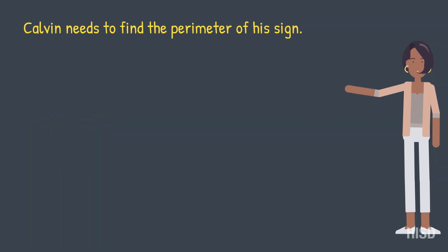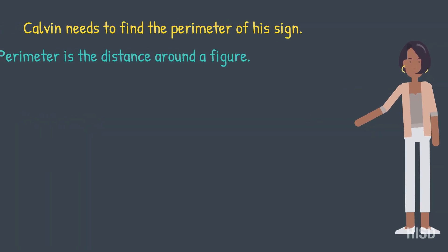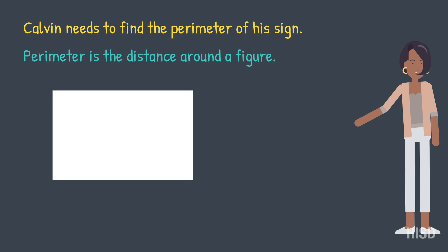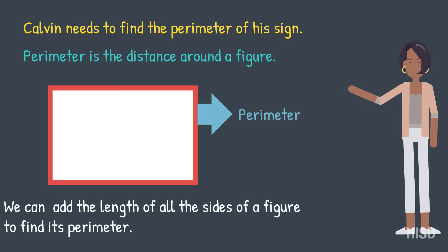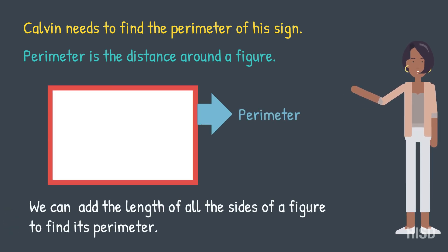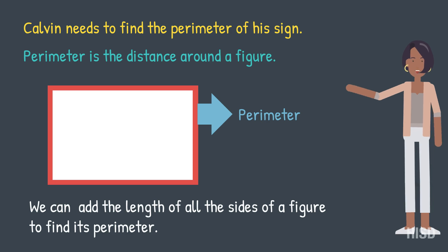Calvin needs to find the perimeter of his sign. Perimeter is the distance around a figure. We can add the length of all the sides of a figure to find its perimeter.